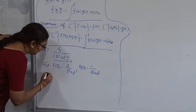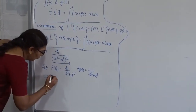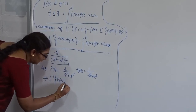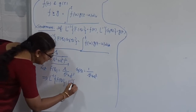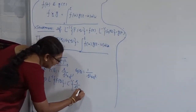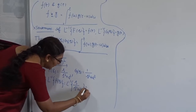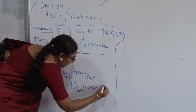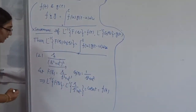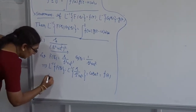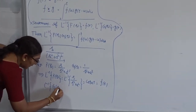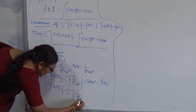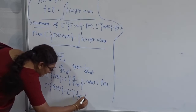Therefore I am going to use the convolution theorem. Before applying the convolution theorem, first find the corresponding inverse function values. The inverse Laplace of S/(S² + a²) is cos(at), and that is my f(t). Next, the inverse Laplace of G(S) = 1/(S² + a²) — what is this value? It is sin(at).